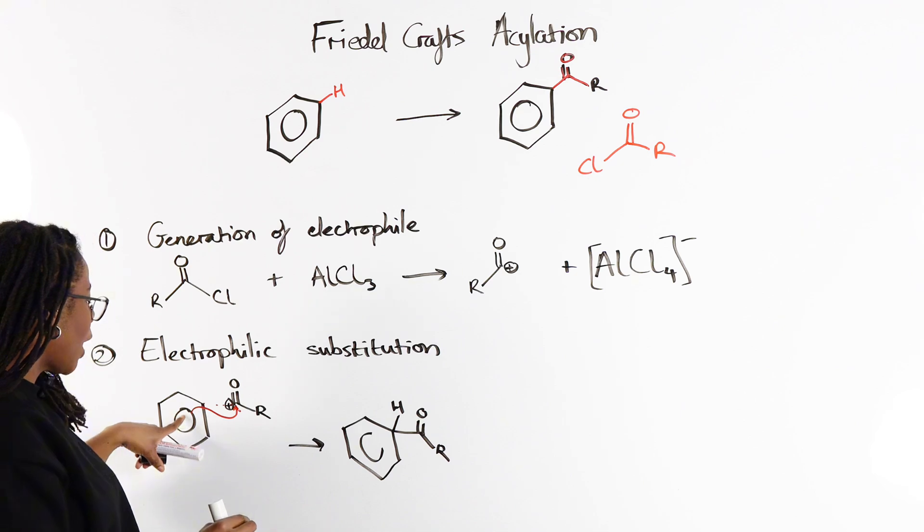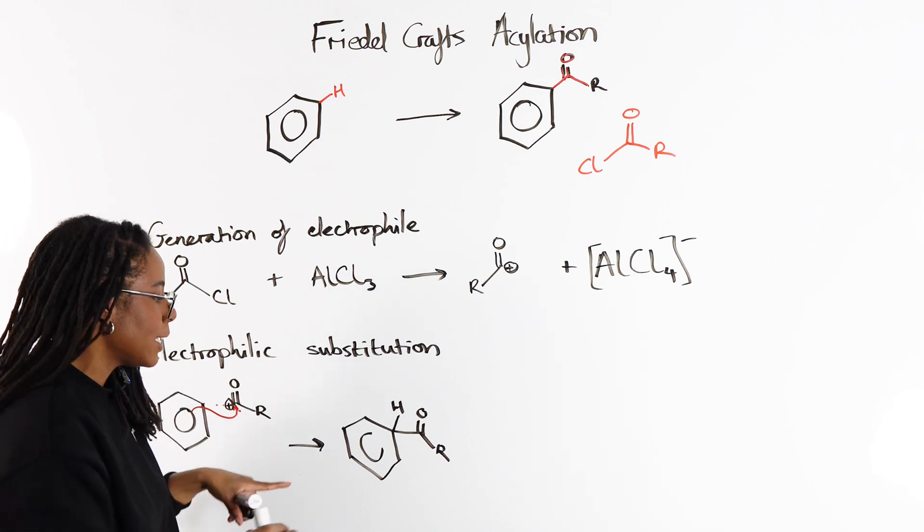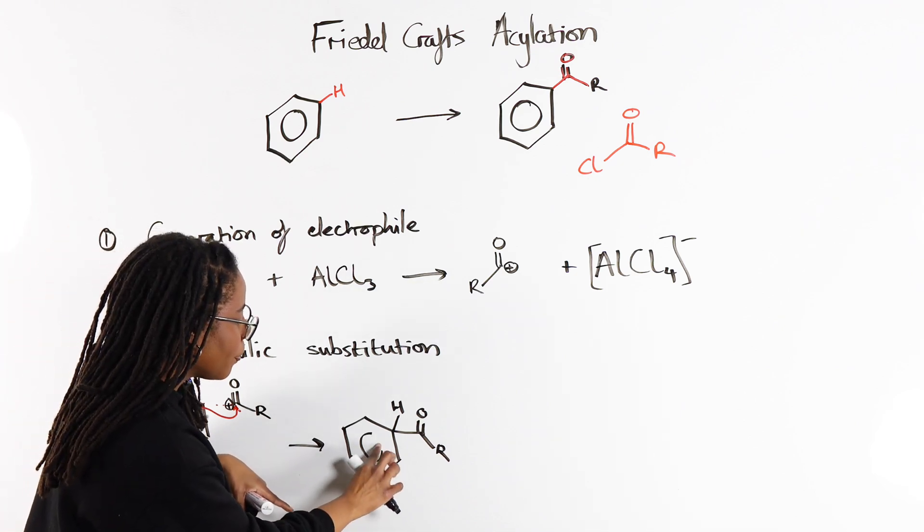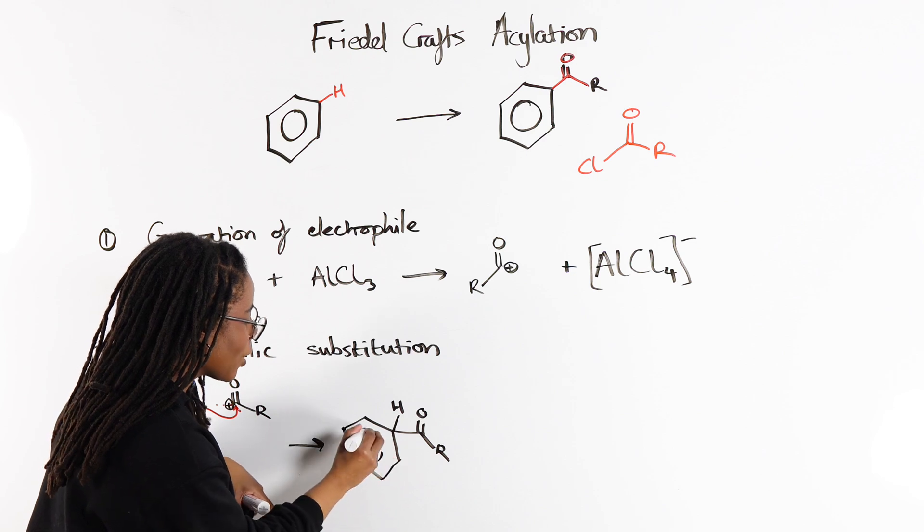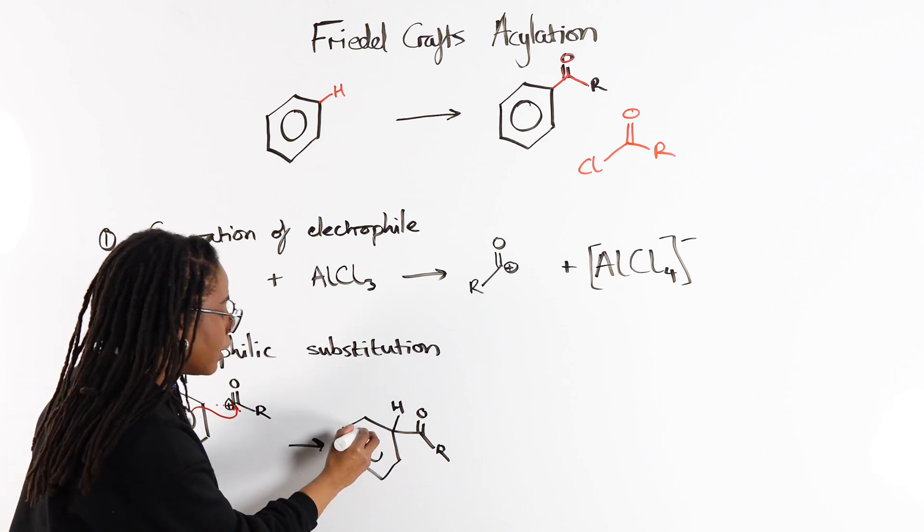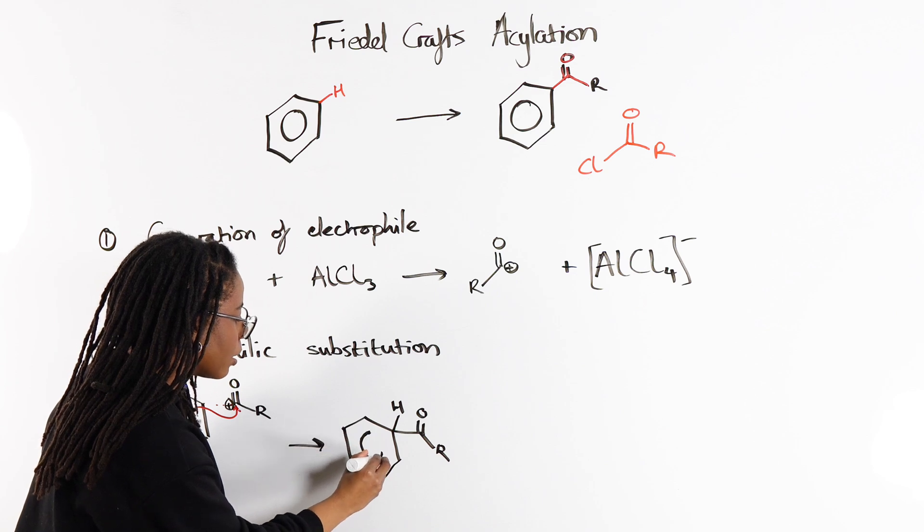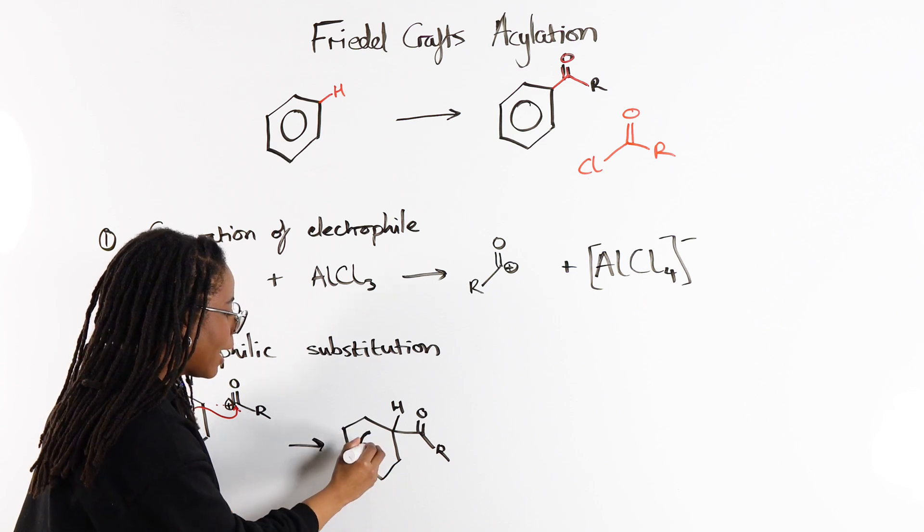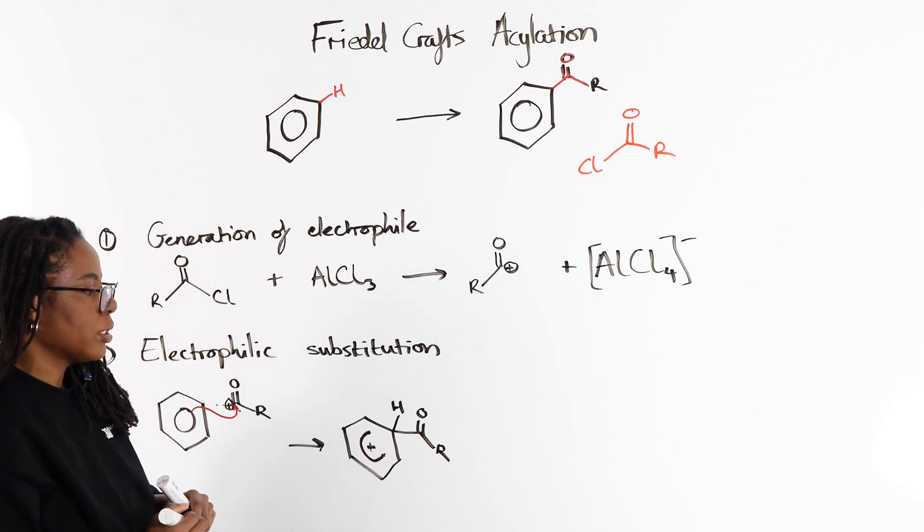But because we have opened up, we've disrupted these delocalized electrons. Our pi ring is going to be open towards the carbon that is being substituted and that we'll have our positive charge.